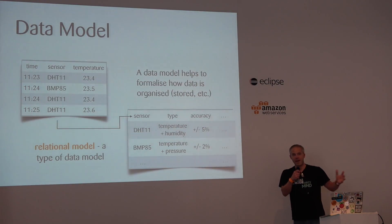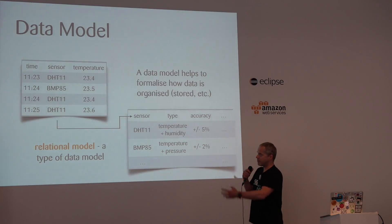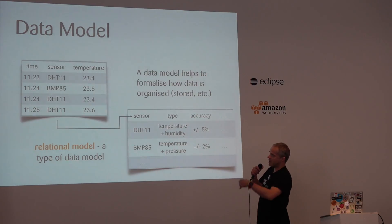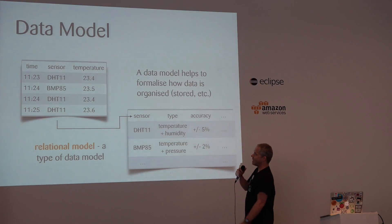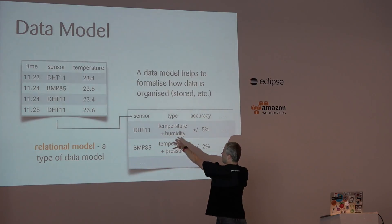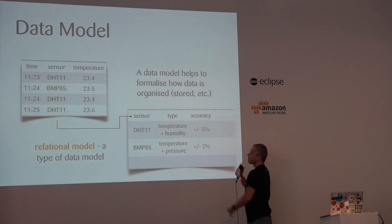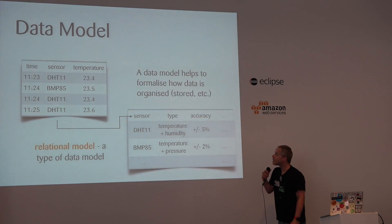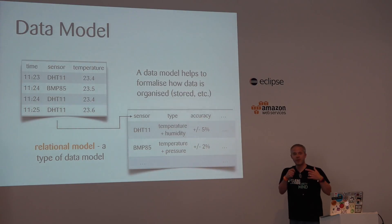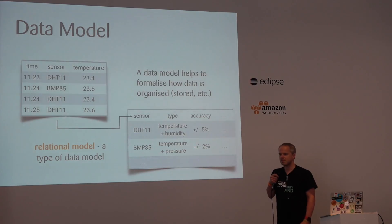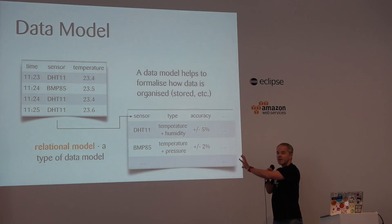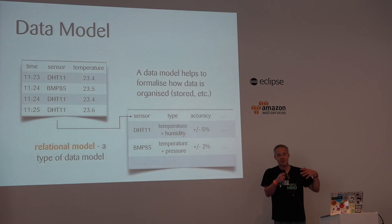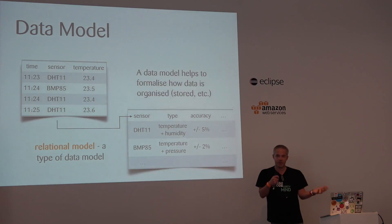So a data model that probably every one of you knows — here we have a sort of relational database. Table number one has time, timestamp, sensor, temperature, and that sensor relates to essentially a second table, where we could read about temperature and humidity and what the sensor does. The data model helps us to formalise and describe our data. It doesn't say anything about the capabilities of our sensor. This is really just a definition of how we can write this data to disk and read it later.